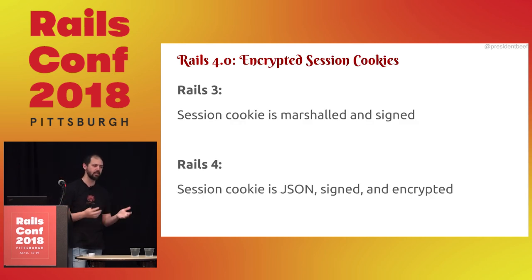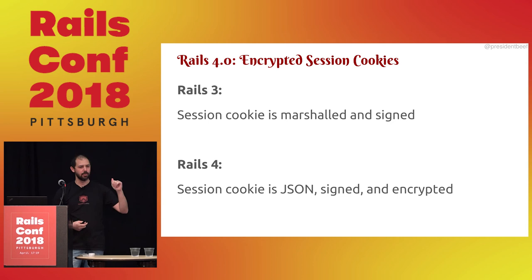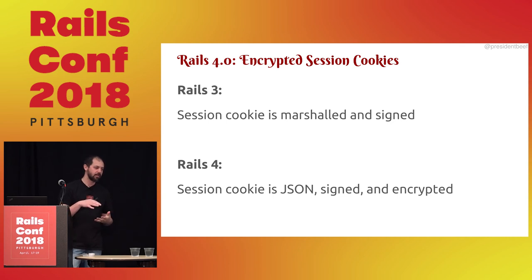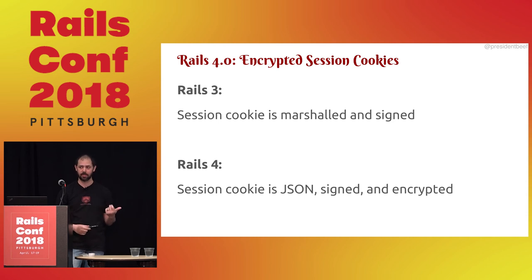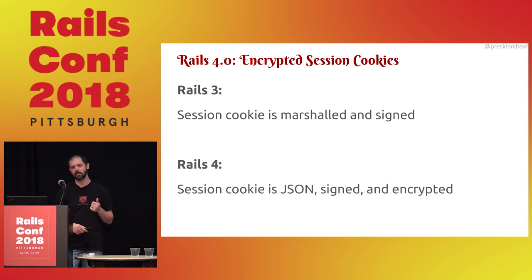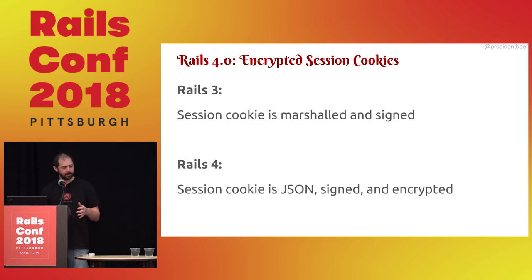Rails 4.0 also got encrypted session cookies. Before Rails 4, a session cookie was marshaled, signed, URI-encoded, and Base64-encoded. You couldn't forge cookies easily, but you could read them just fine — so if people put sensitive values into the session cookie, you could read them. In Rails 4, the session cookie was no longer marshaled — it's JSON, which is good because serializing and deserializing things is dangerous. It's still signed and it's encrypted, so you can't easily read it.